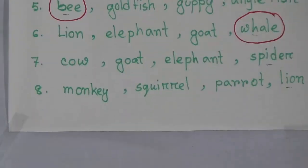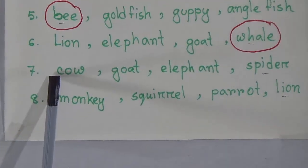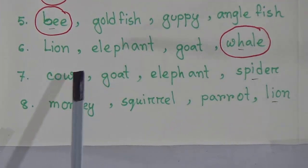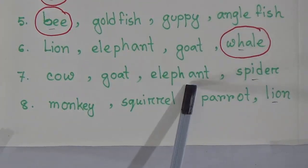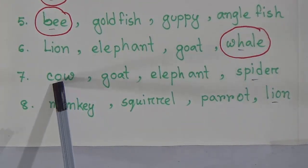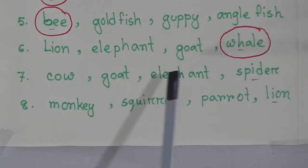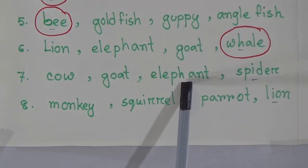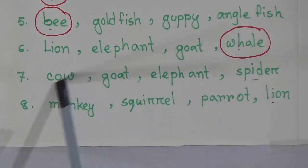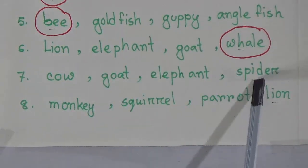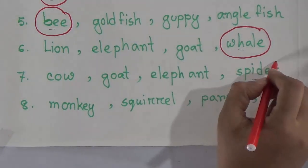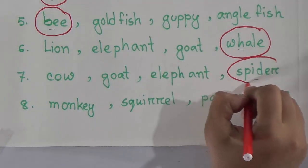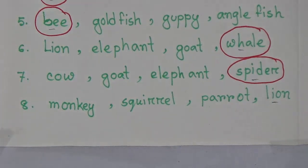Our seventh odd one out is: cow, elephant, spider, and goat. Cow, elephant, and goat are land animals, but spider is an insect. That is why spider is the odd word here.